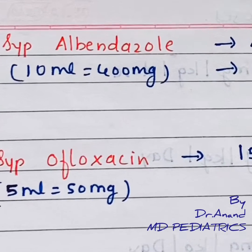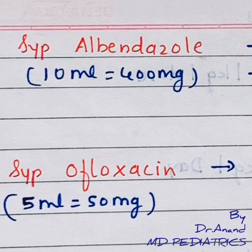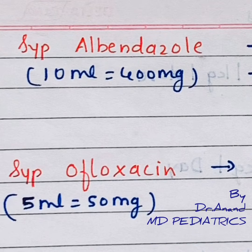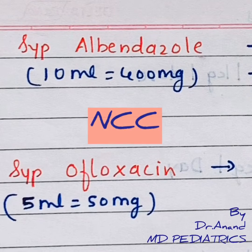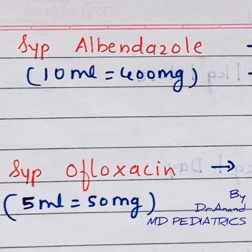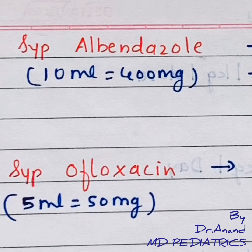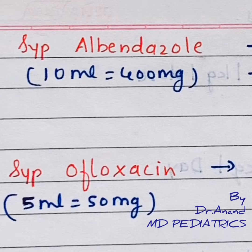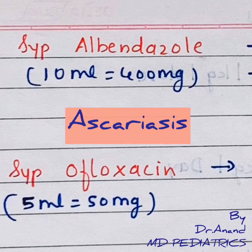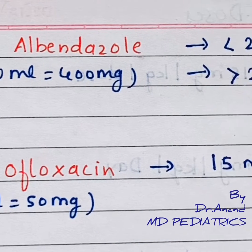Coming to albendazole, we should know a few points about it. The important uses of albendazole are: first, neurocysticercosis — lesions of Taenia solium. It is also used for ascariasis, hookworm (Necator americanus), and related infections.